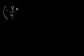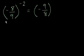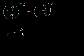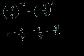Negative 8 over 9 to the negative 2nd power. Once again, that equals negative 9 over 8 to the positive 2 power — I just immediately took the reciprocal of the base. And now that equals negative 9 over 8 times negative 9 over 8. A negative times a negative is a positive, so we get 9 times 9 is 81 over 64.